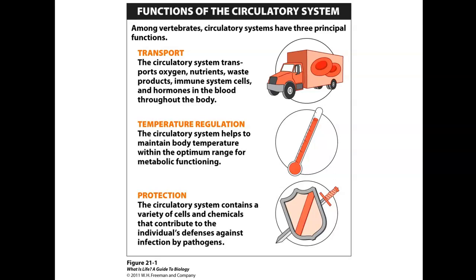For protection, the circulatory system contains a variety of cells and chemicals that contribute to the body's defense against infection and pathogens — these include different types of white blood cells and the lymphatic and immune system.